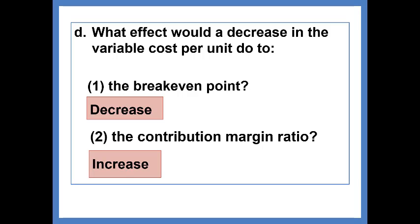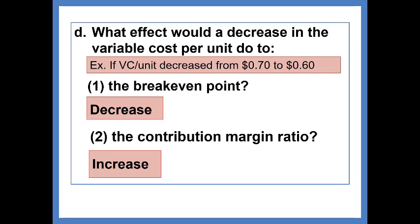Now, if it's difficult for you to just think this out in your head, you can make up some numbers. For example, we could assume that the variable cost per unit decreased from $0.70 per unit to $0.60 per unit. This would fall in line with a decrease in the variable cost per unit, as stated.